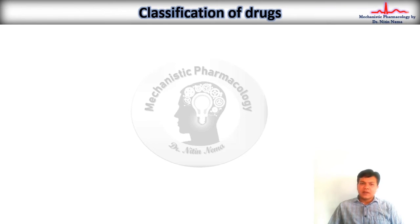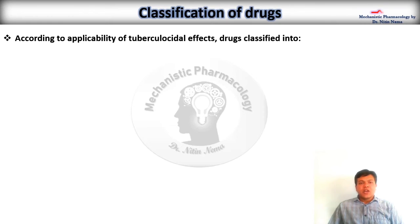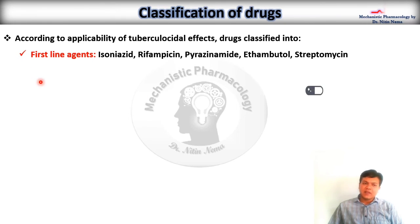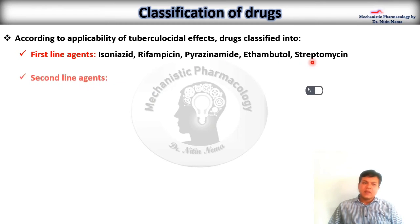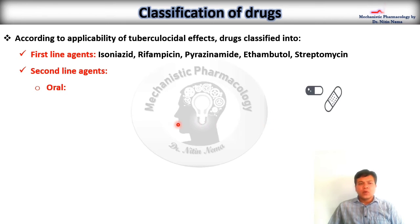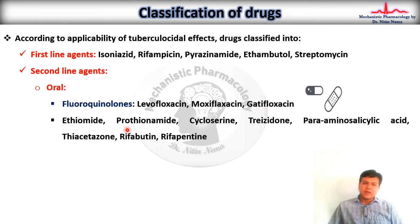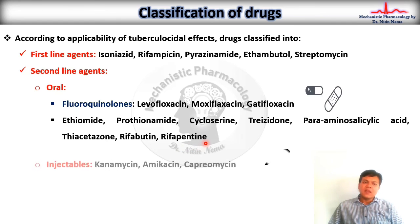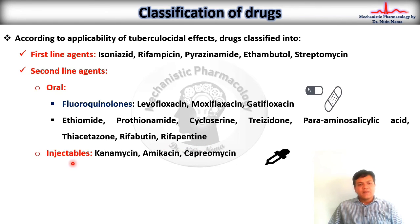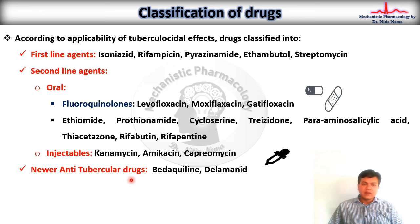Heading towards the classification of drugs — according to the applicability of tuberculocidal effects, drugs are classified as first-line agents: isoniazid, rifampicin, pyrazinamide, ethambutol, and streptomycin. Second-line agent drugs are divided into two forms. Oral drugs include fluoroquinolones — levofloxacin, moxifloxacin, and gatifloxacin — and other categories like ethionamide, prothionamide, cycloserine, rifabutin, and rifapentine. The injectable category of second-line agents includes kanamycin, amikacin, and capreomycin. Lastly, some newer anti-tubercular drugs like bedaquiline and delamanid have also come into existence, though continuous research is still ongoing on these drugs.